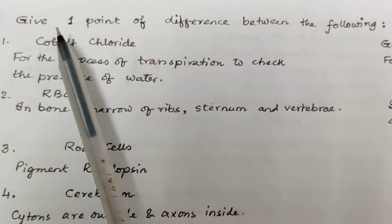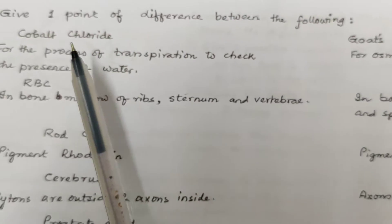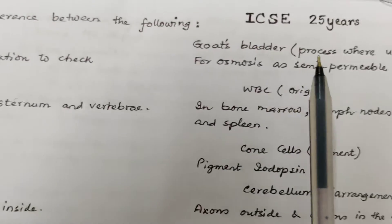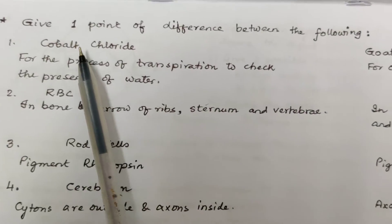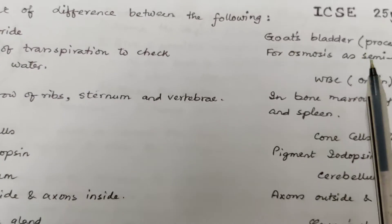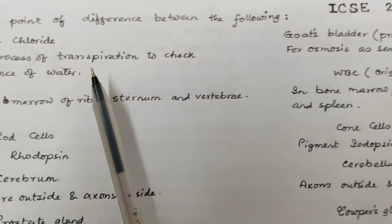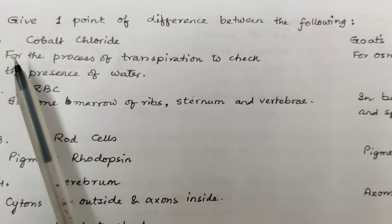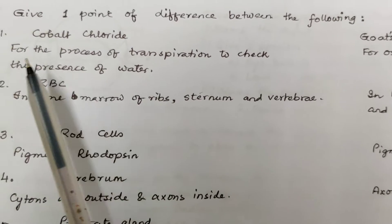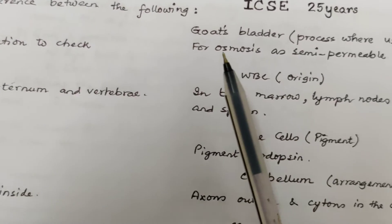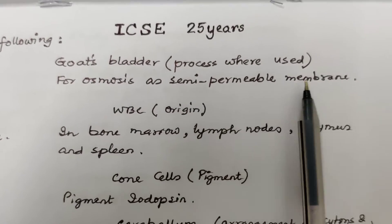Here we have: give one point of difference between the following, just one point based on their parameters. The difference between cobalt chloride and goat's bladder based on the parameter of process used: cobalt chloride is used for the process of transpiration to check the presence of water, whereas goat's bladder is used for osmosis as a semi-permeable membrane.